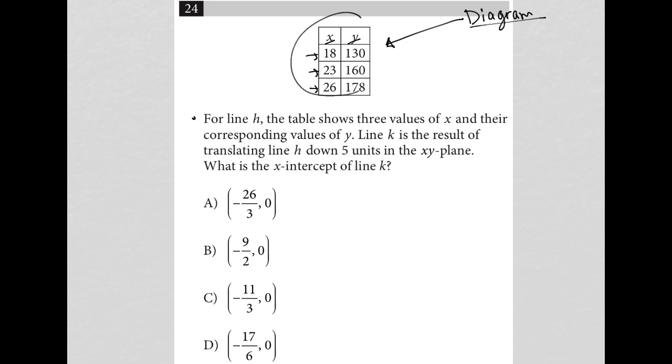If I take these values, this is line H, and I'm translating them down five units in the XY plane, that means I'm not affecting the X values. The X values are not being affected. I'm not translating anything horizontally.